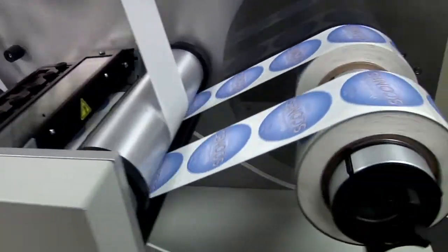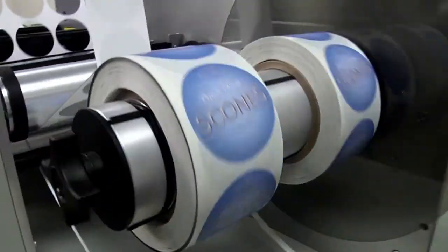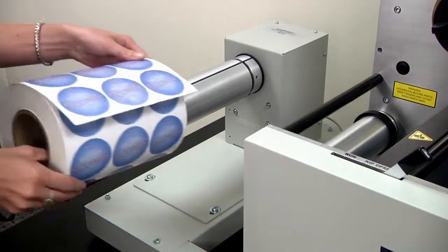It also slits the liner and rewinds your printed labels into multiple finished rolls that are perfect every time. Setup and operation is simple.